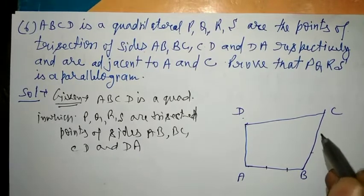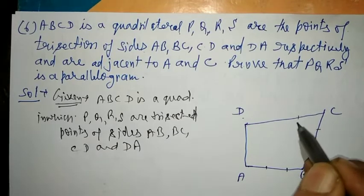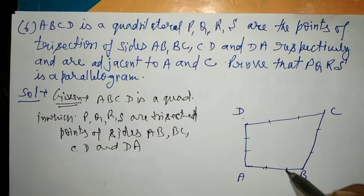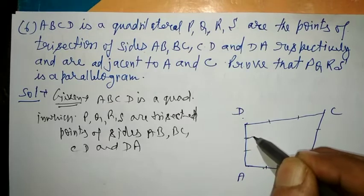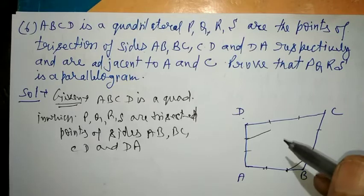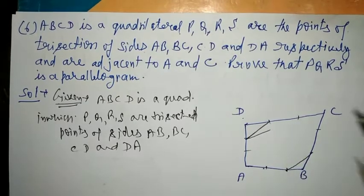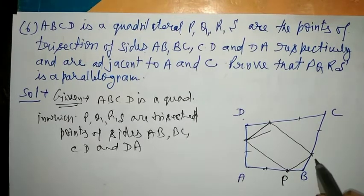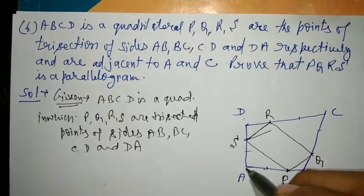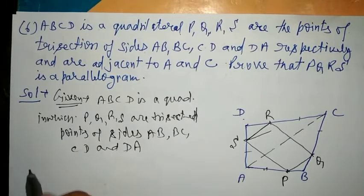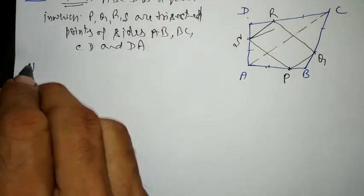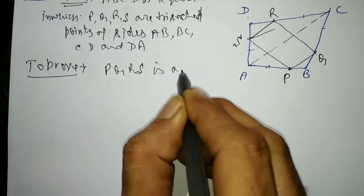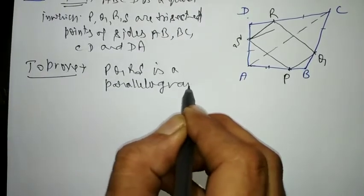AB is divided into 3 equal parts, similarly BC into 3 equal parts, CD into 3 equal parts, and AD into 3 equal parts. Taking one part from each trisected side and joining them gives points P, Q, R, S. AC is also joined. To prove: PQRS is a parallelogram.